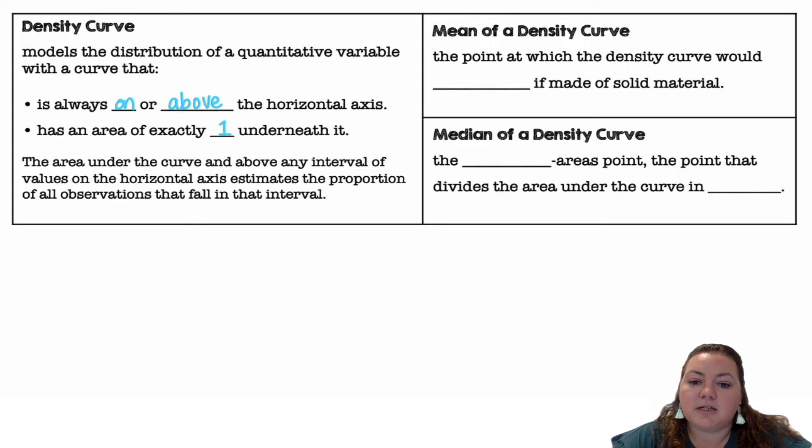The mean of a density curve is the point at which the density curve would balance if it was made out of a solid material. The median of the density curve is the equal area point, the point that divides the area under the curve in half.